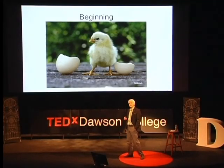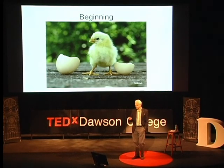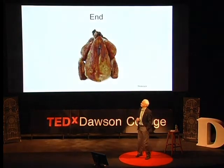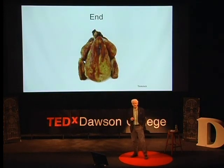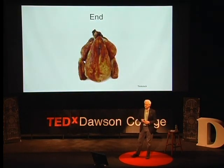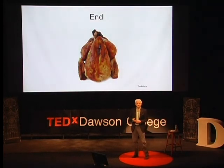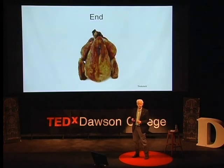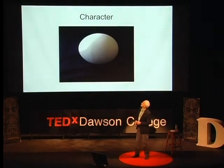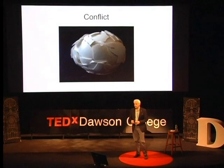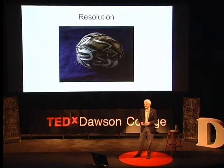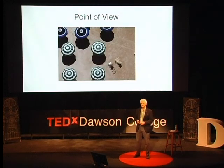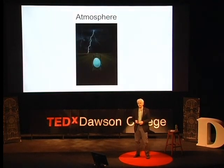Narrative depends on structure — mainly a beginning, a middle, and an end, but not necessarily in that order. The elements of narrative include character, conflict, and resolution, along with added information that comes from setting, point of view, and atmosphere.